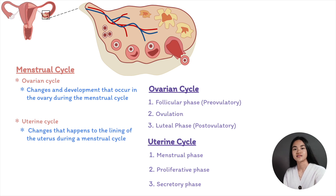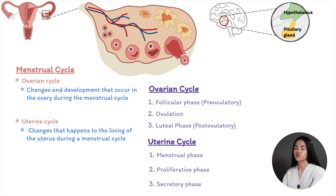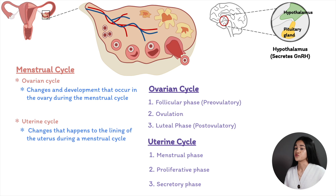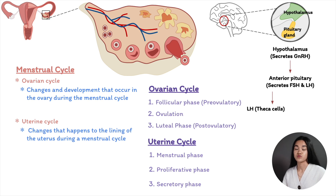Let's break down the hypothalamic-pituitary-gonadal axis, or HPG axis, because this is what controls the process. The hypothalamus is a small region of the brain close to the pituitary gland. It secretes gonadotropin-releasing hormone, GnRH, and the frequency and amplitude of these pulses changes during the cycle. GnRH travels to the anterior pituitary gland via the hypothalamo-hypophysial portal vessels and triggers the release of luteinizing hormone, LH, and follicle-stimulating hormone, FSH. These hormones then travel to the ovaries and influence several events.